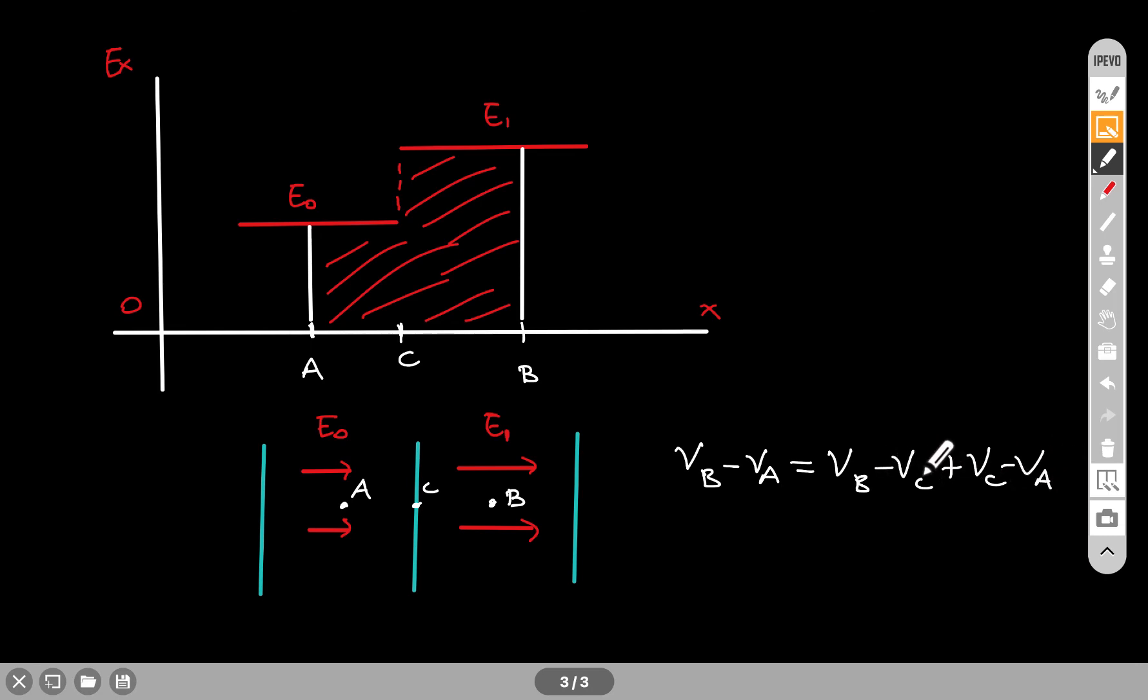If you see, I've done minus VC plus VC really, I'm just adding a zero. I'm not really changing anything. But procedure wise, it does make a small difference.